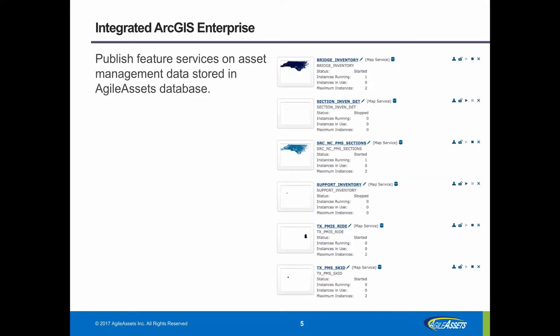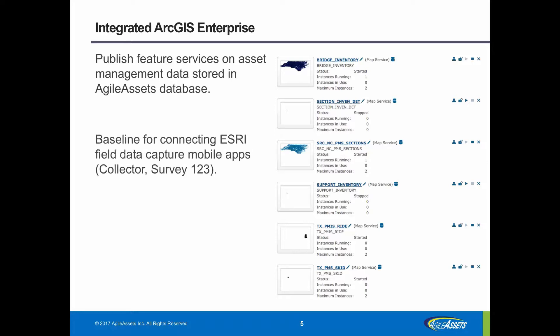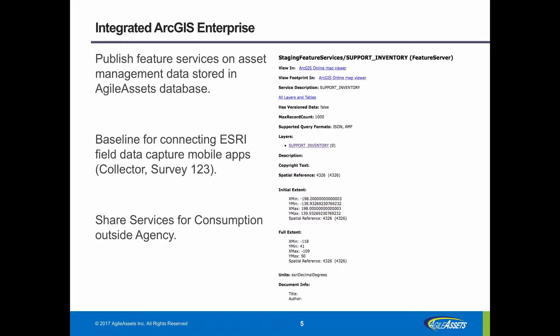This integration gives agencies the ability to easily create and publish services based on the asset data, such as for asset inventory, work management, or inspections. As long as the data in the asset management database has locations, these services can be published. These services can be made editable and utilized as a basis for enabling and setting up Esri's Collector or Survey123 field data collection app. These services also allow an agency to easily democratize information across an agency or outside of it as appropriate, reducing or eliminating information access bottlenecks.